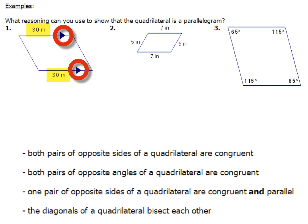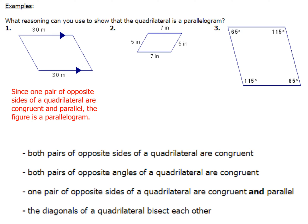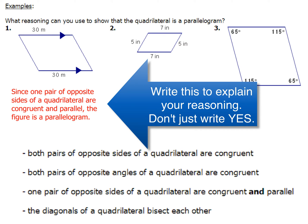You are a rock star because you know this stuff. Since one pair of opposite sides of the quadrilateral are congruent and parallel, the figure is a parallelogram. Be sure you write out a sentence that justifies and explains your reasoning.